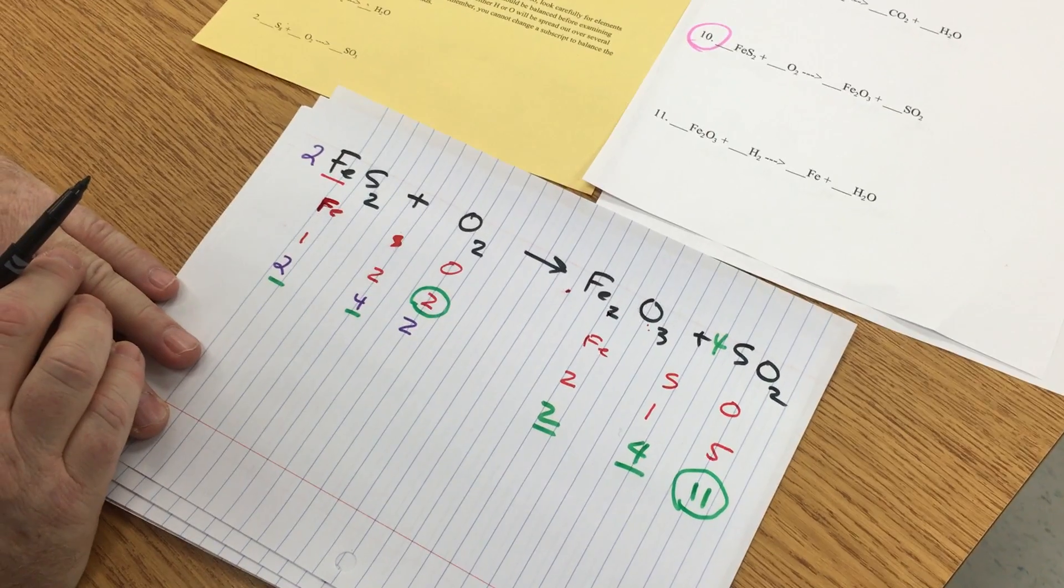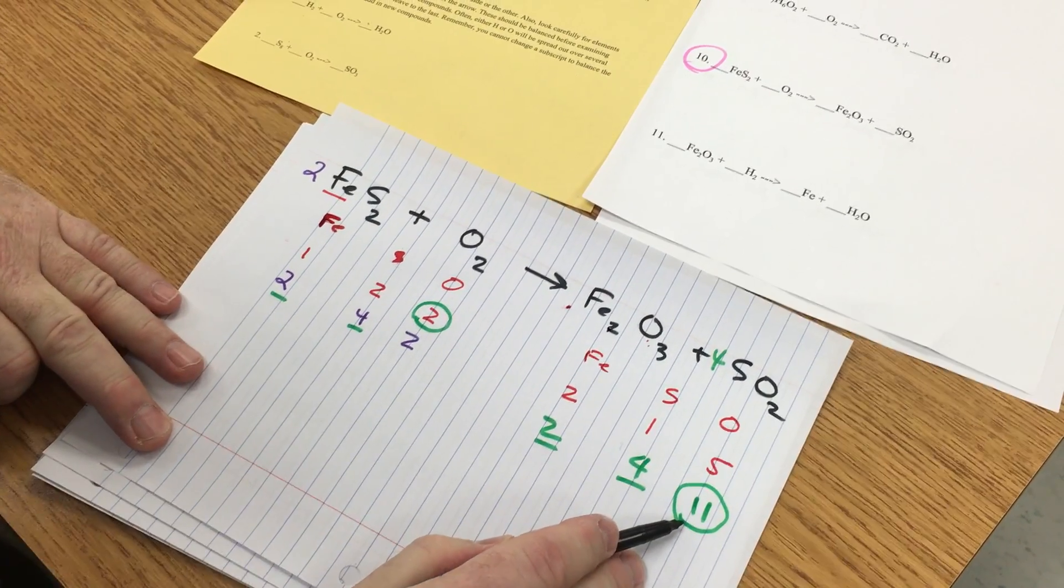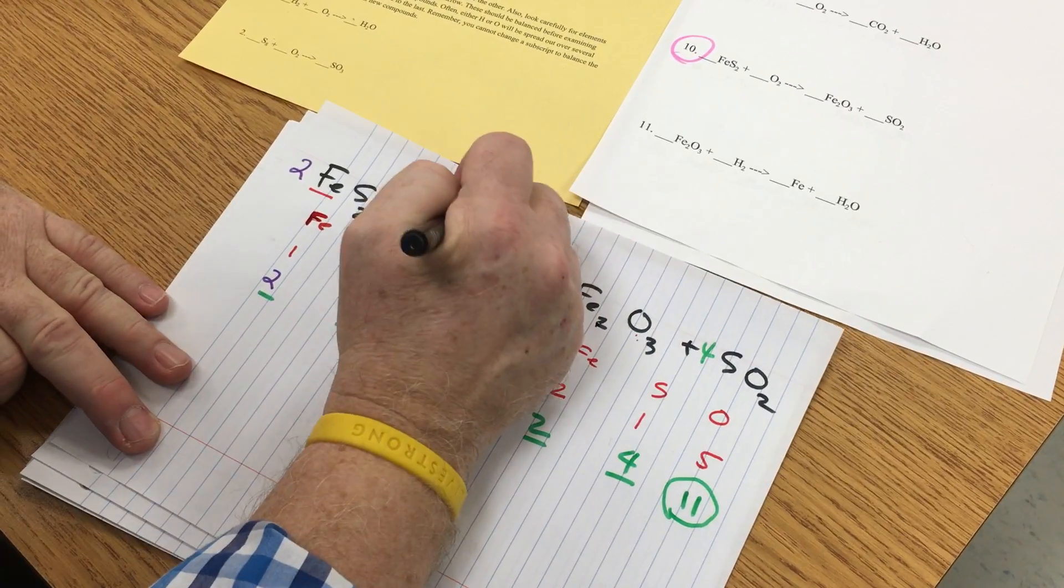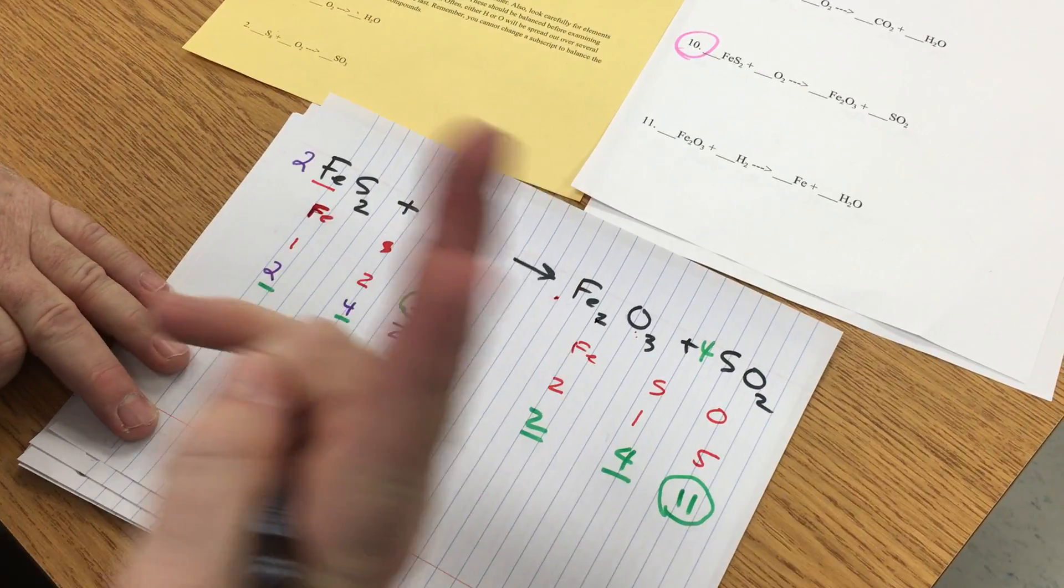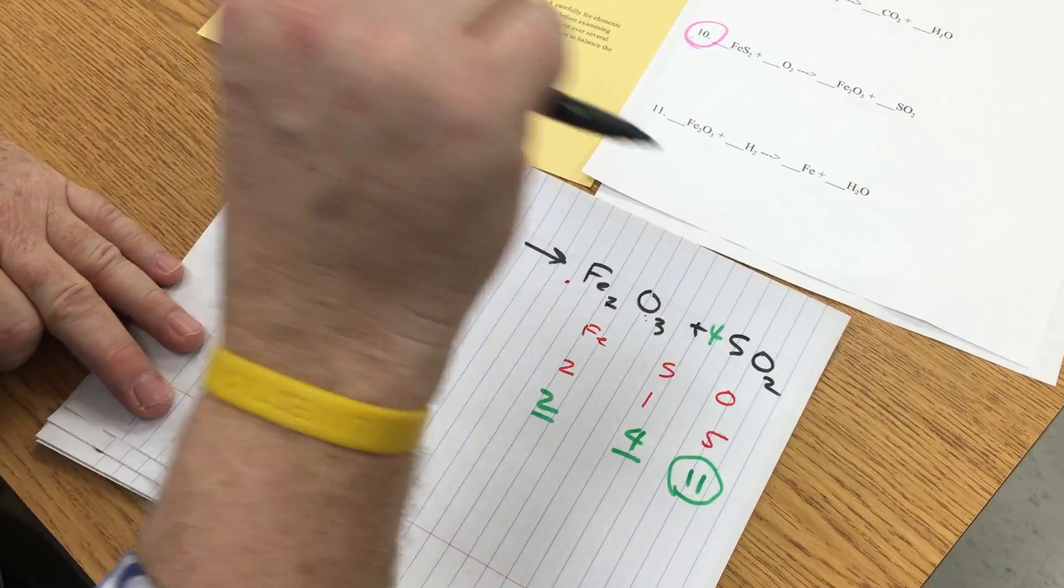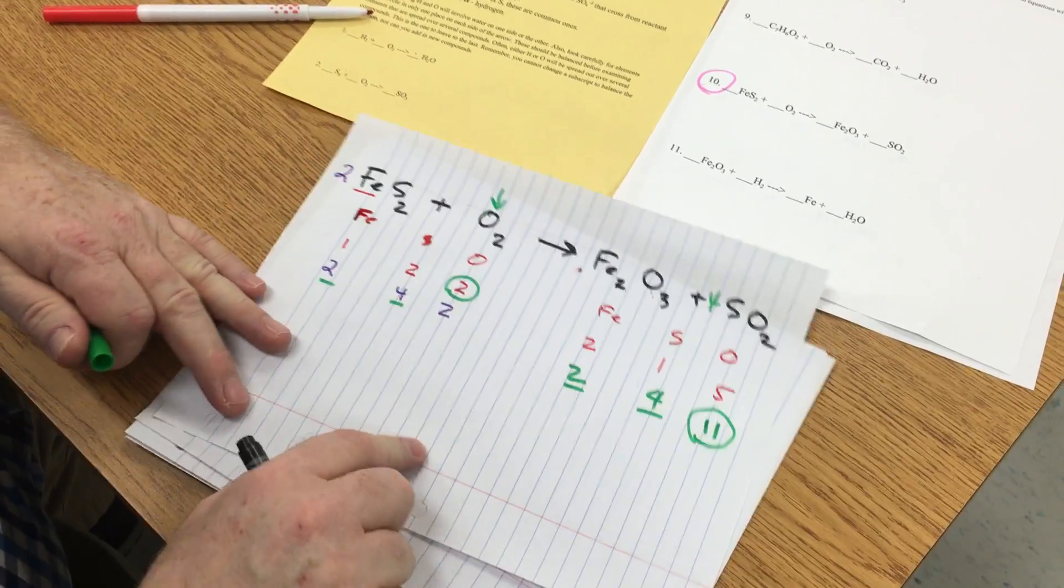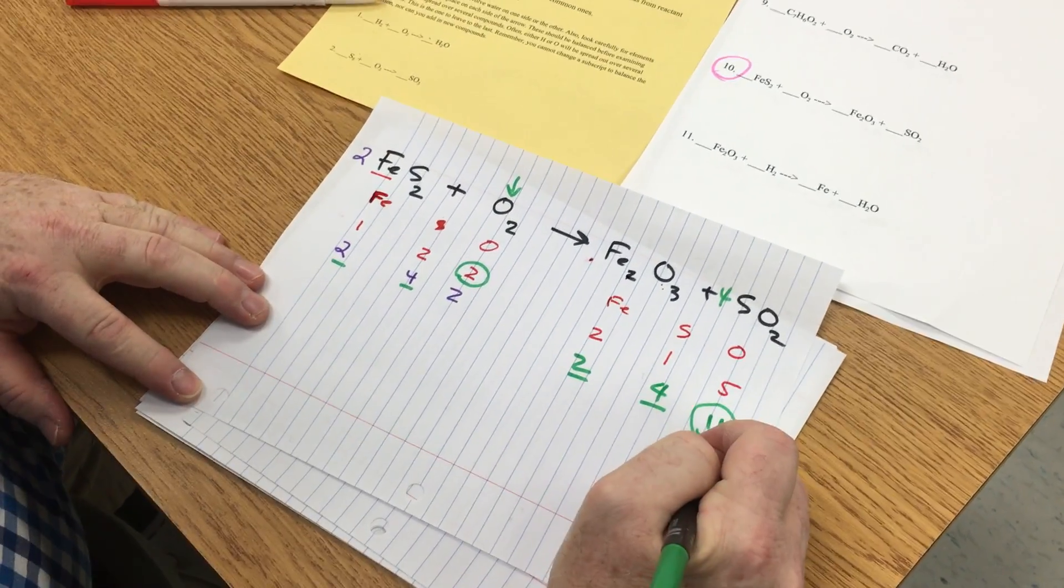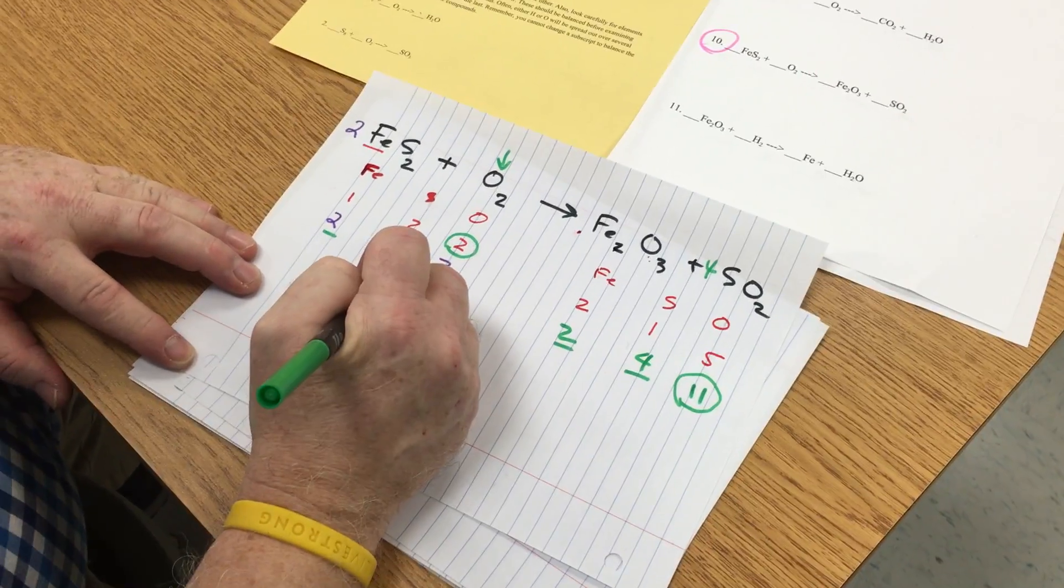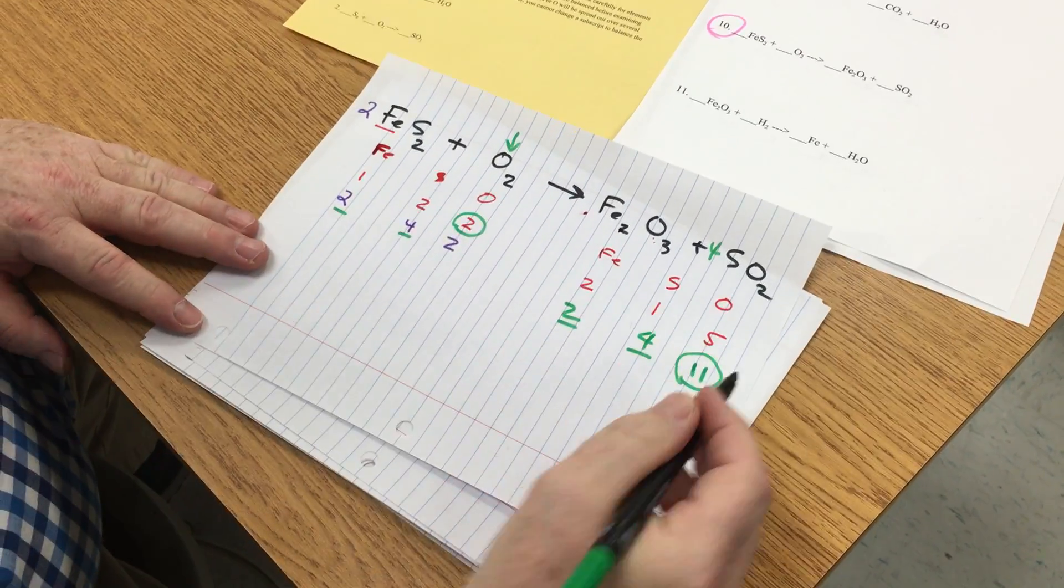And two. I have eleven here, I have two here. Oxygen is diatomic, it always has to show up in two atoms together to make a molecule. So I realize now I have to do something. I can't have eleven on this side and two on this side. So what I'm going to do is I'm going to double everything.